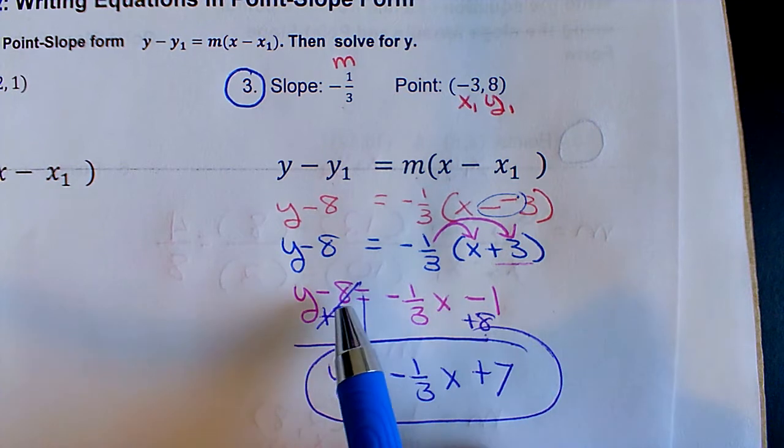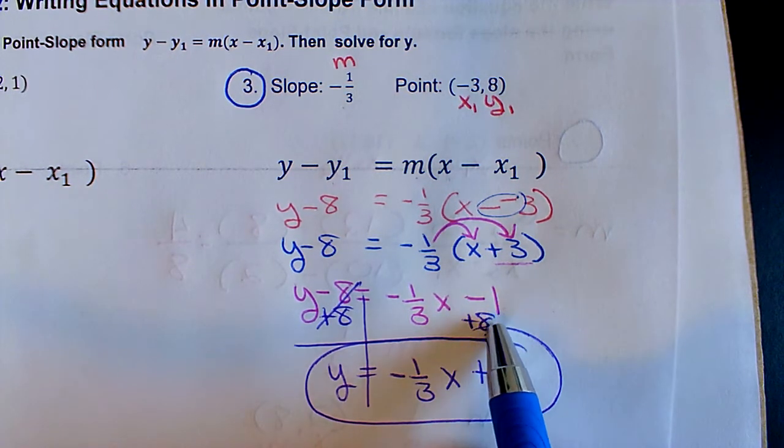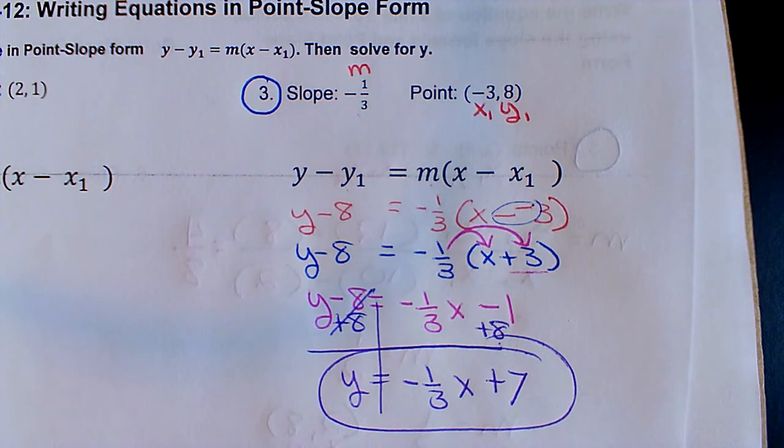Then from there, you're going to add 8 to both sides, and remember you can only do it to the other number without the letter, so our answer is negative 1/3x plus 7. So that's how you're going to do the four problems on the front.